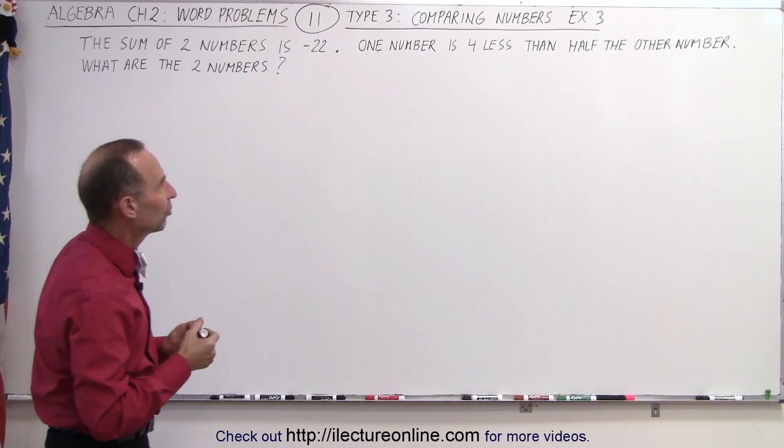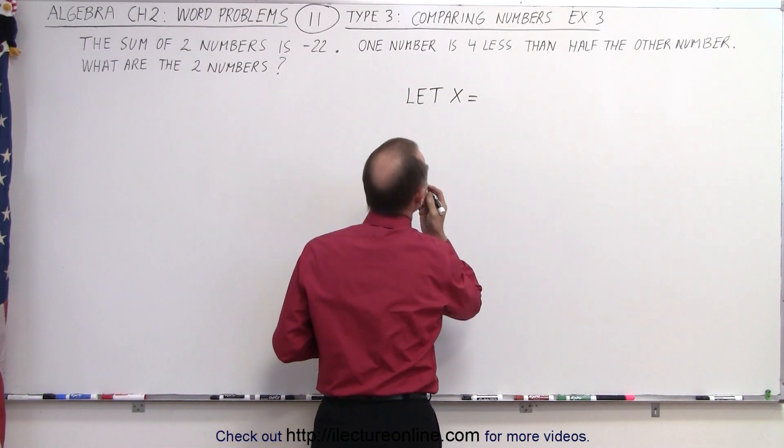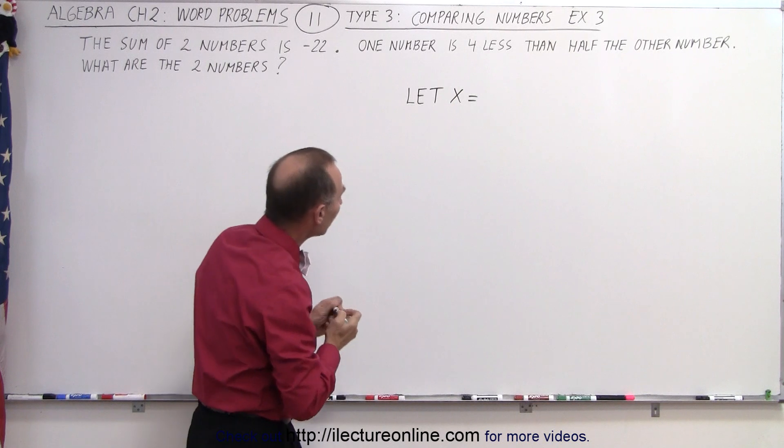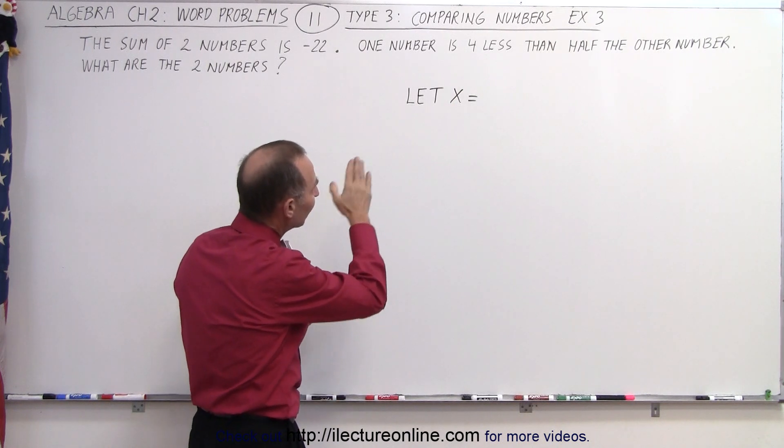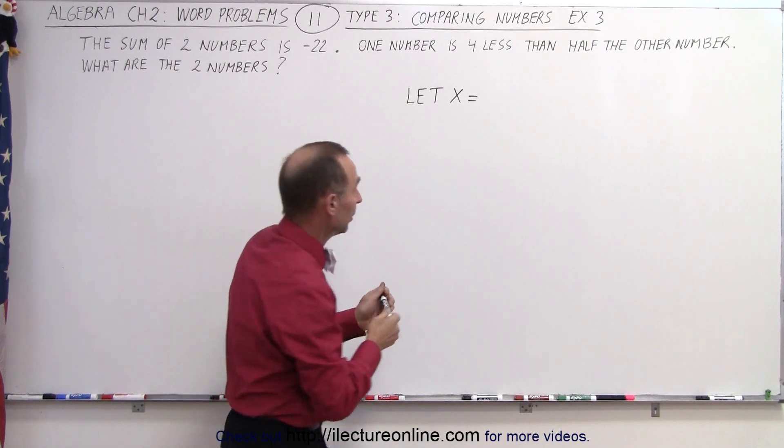So here we have two numbers, so we're going to let x equal... let's see here. Here we have one number, which is defined in terms of the other number. So let x equal the other number.